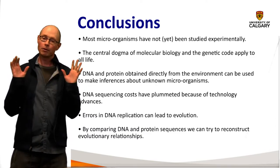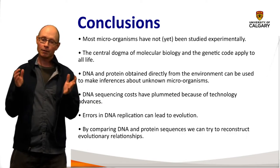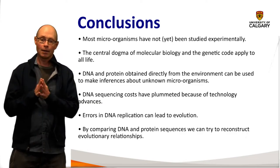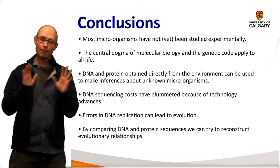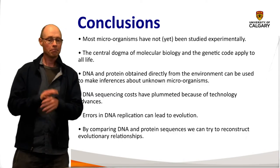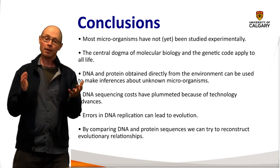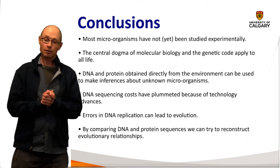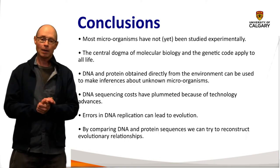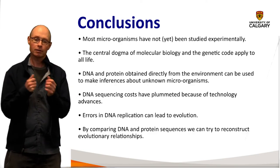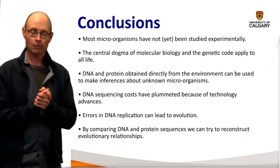So, conclusions of this episode: most microorganisms have not yet been studied experimentally. The central dogma of molecular biology and the genetic code applies to all life. DNA and protein obtained directly from the environment — without growing anything — can be used to make inferences about unknown microorganisms; for example, 'this must be a methanogen because it has the genes encoding the machines for methane production.' DNA sequencing costs have plummeted due to technology advances. Errors in DNA replication lead to evolution, and by comparing DNA and protein sequences we try to reconstruct evolutionary relationships and the order of events long ago. That concludes episode 3.